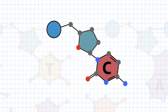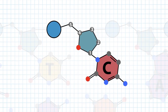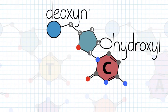The nitrogenous base is always attached at the 1' carbon of the sugar. If we count from there, we can see that there is a phosphate between the 5' carbon of one sugar and the 3' carbon of the neighboring sugar. The sugar is called deoxyribose because it is missing a hydroxyl group at the 2' carbon, which is present in ribose. Because of this, nucleotides in DNA, deoxyribonucleic acid, are called deoxynucleotides.